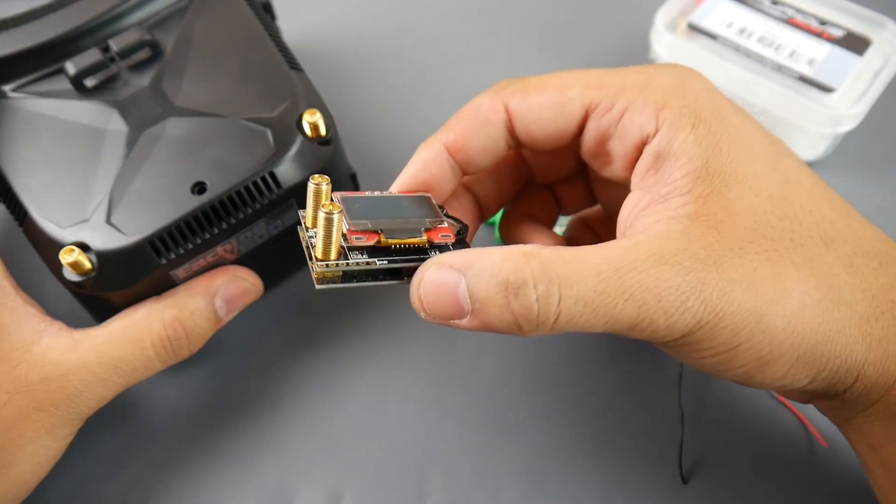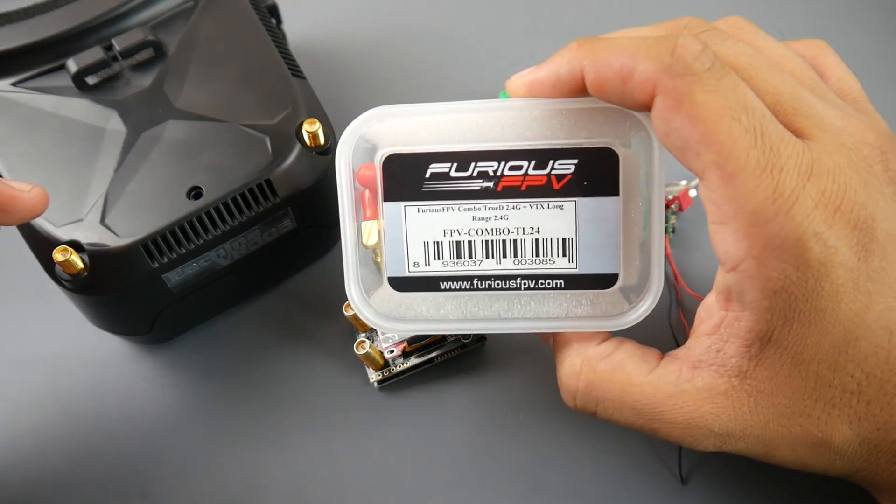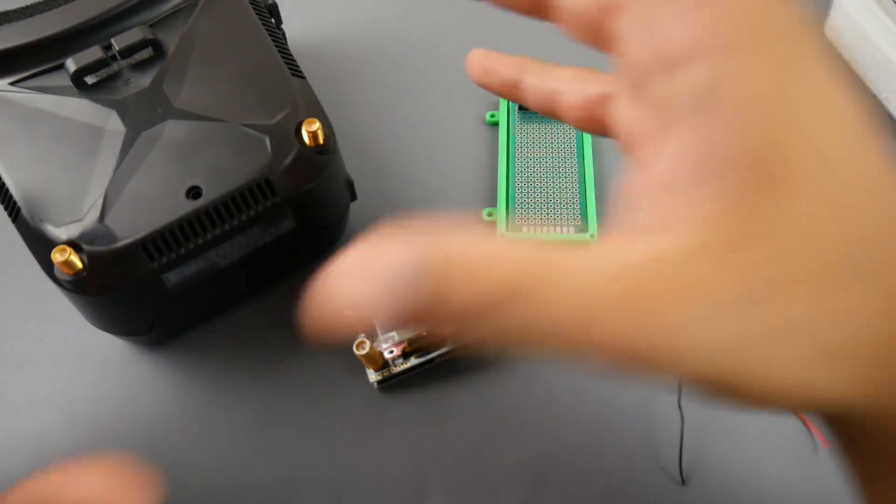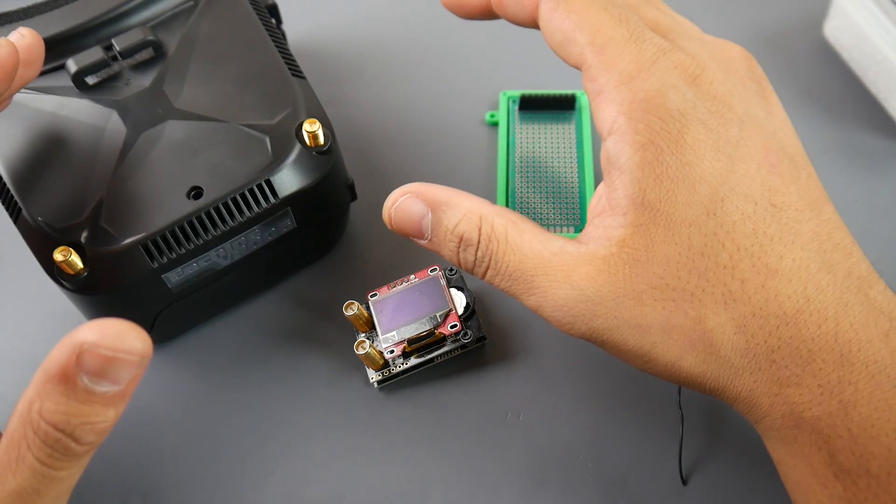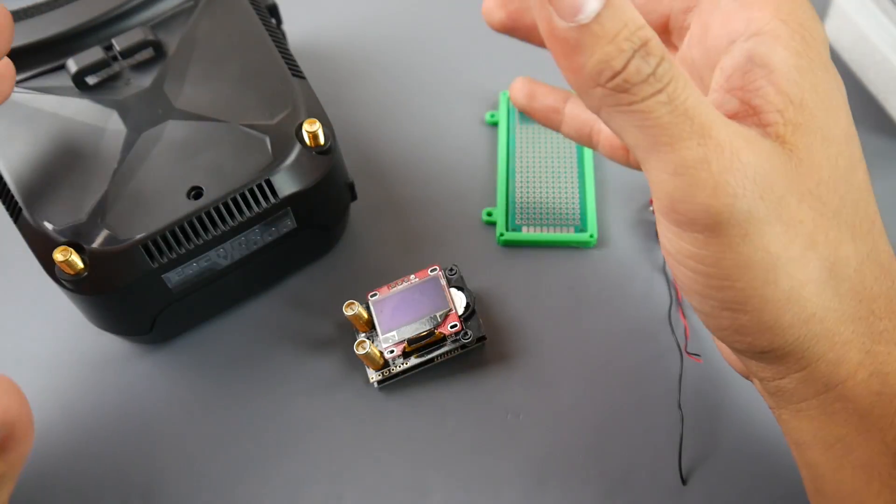So this is the reason why we do such a thing. And also now we're getting the 2.4 gigahertz Fatshark module. Now currently on box goggles, there's nothing that runs 2.4 gigahertz. And this is also a reason why you'd want to do that.